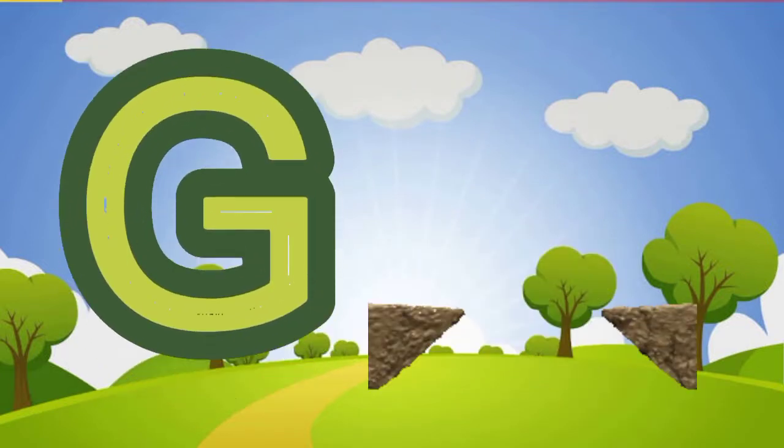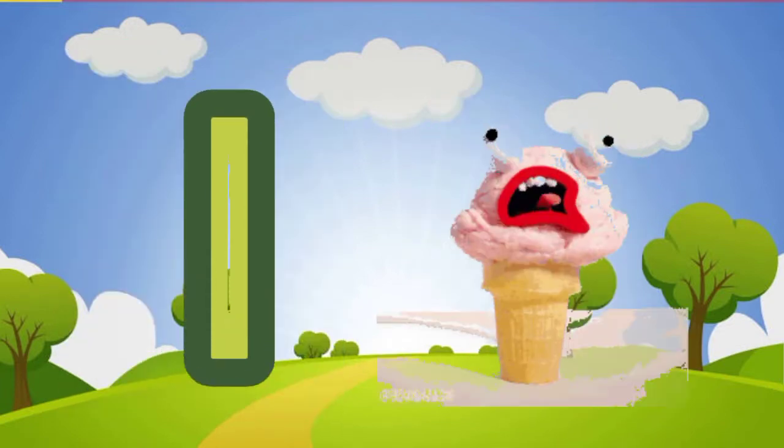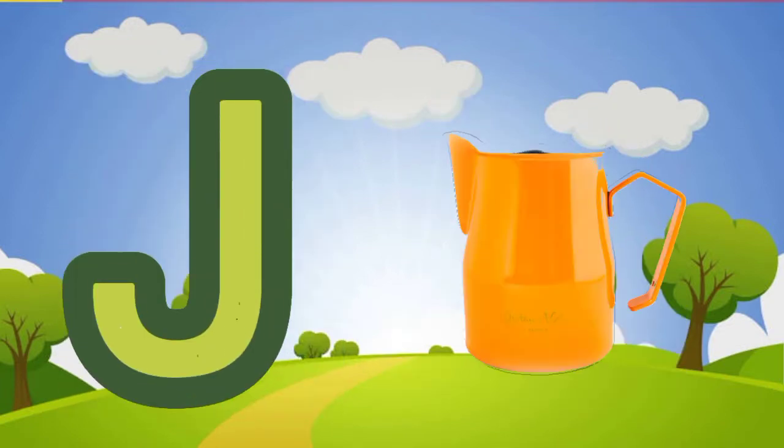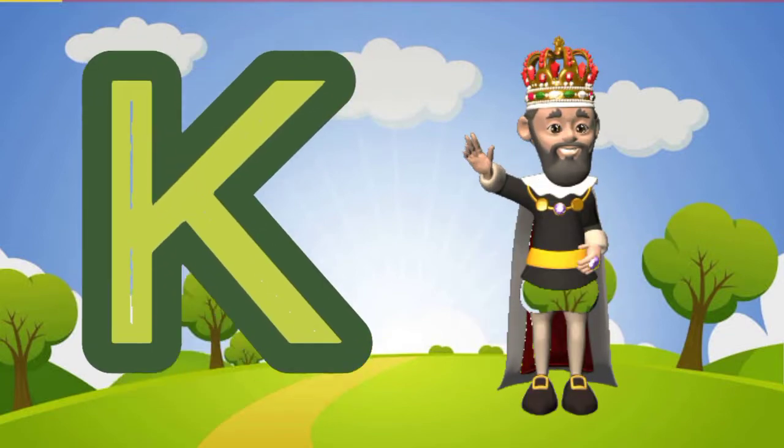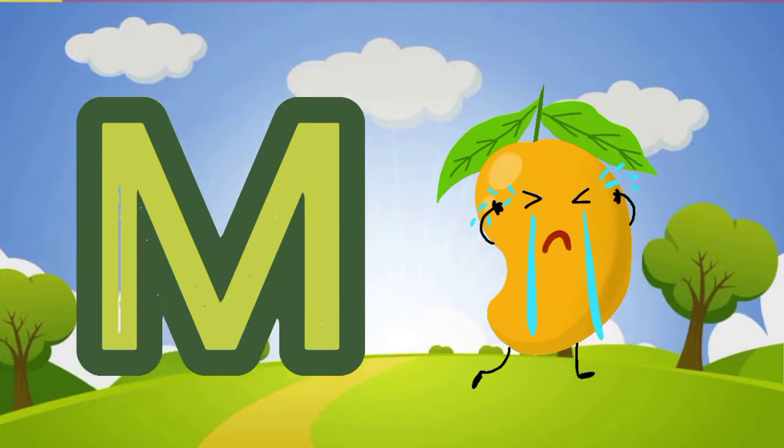G for gap, H for hen, I for ice cream, J for jug, K for king, L for lamb, M for mango.